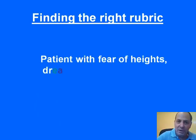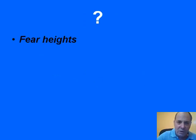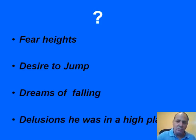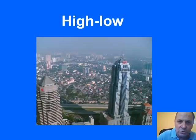Here's one last example: a patient with fear of heights, dreams of falling, and impulse to jump. Obviously there are many issues here to do with heights, falling, and jumping. The fear of heights? The desire to jump? The dreams of falling? Or maybe delusion of being in a high place? I've created a rubric called High and Low, which contains all these concepts of up and down, falling, heights, etc.